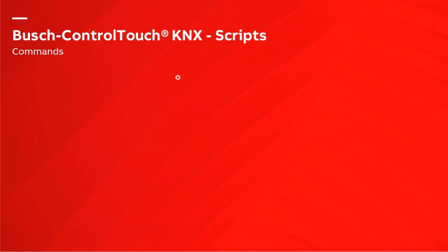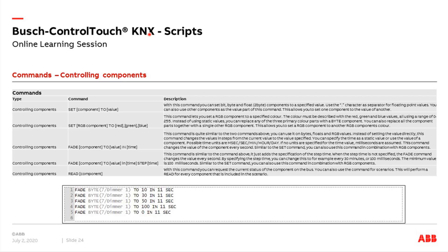Now an overview of the possible commands available in Control Touch scripts. We have general commands to set a component to a value. The 'set' command provides a direct switch to a certain value, and the 'fade' command lets you create a slow dimming behavior. For example, fading a dimmer from 0 to 100% in steps: first to 10% in 11 seconds, then to 30% in 11 seconds, and so on. You can use seconds, minutes, hours, or even days for the time parameter. There is also a 'read' command to read the status of components like a valve.